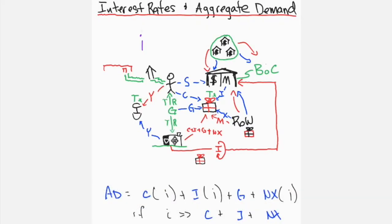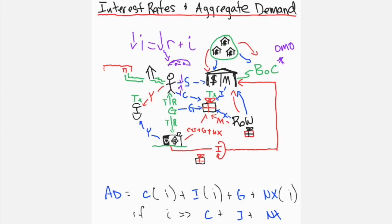As short-term interest rates fall through open market operations carried out by the Bank of Canada, real rates fall. Regarding consumption expenditure, decreased real rates decrease the interest expense of buying consumer durables. Additionally, this causes a relative decrease in the amount of financial debt instruments bought, causing savings to decrease and consumption to increase. Together, consumption increases with decreases in real interest rates.